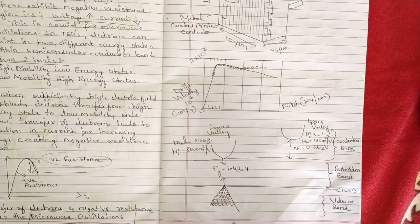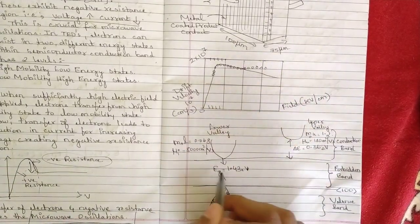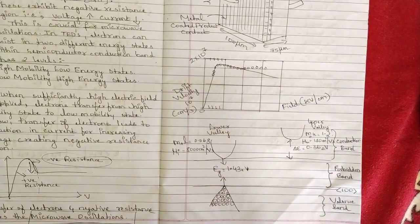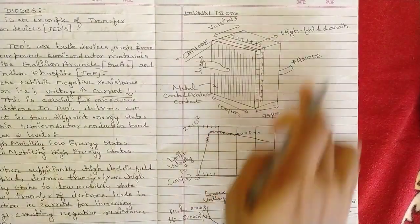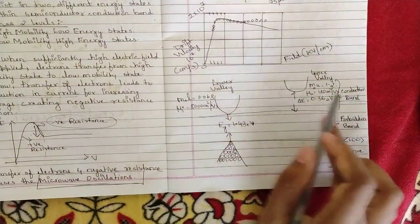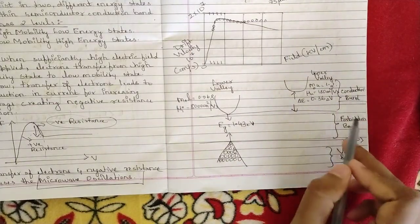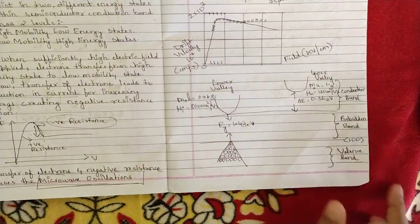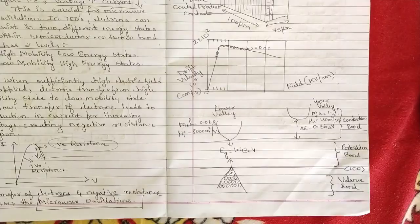The forbidden energy gap Eg is 1.43 electron volts. The valence band is where waves propagate. Please note these diagrams: the construction diagram, the drift velocity versus negative resistance graph, and the upper/lower valley diagram with conduction, valence, and forbidden bands. These concepts and diagrams are very important for the Gunn diode topic.